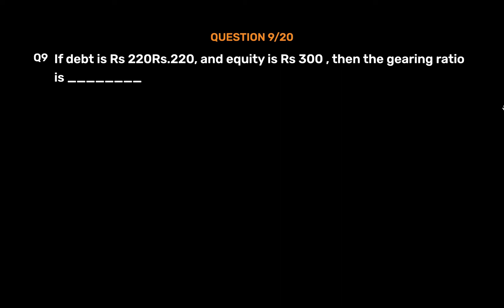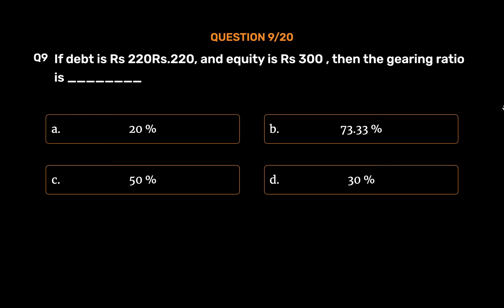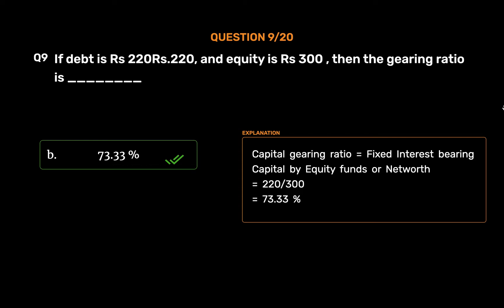Question number 9. If debt is Rs. 220 and equity is Rs. 300, then the gearing ratio is: Option A: 20%. Option B: 73.33%. Option C: 50%. Option D: 30%. The correct answer is Option B: 73.33%. Capital gearing ratio equals fixed interest-bearing capital divided by equity funds or net worth, which equals 220 divided by 300, equals 73.33%.